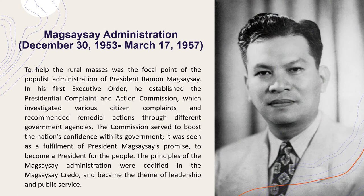Magsaysay Administration, December 30, 1953 to March 17, 1957. To help the rural masses was the focal point of the populist administration of President Ramon Magsaysay. In his first executive order, he established the Presidential Complaint and Action Commission, which investigated various citizen complaints and recommended remedial actions through different government agencies. The commission served to boost the nation's confidence in its government. It was seen as a fulfillment of President Magsaysay's promise to become a president for the people. The principles of the Magsaysay administration were codified in the Magsaysay Credo and became the theme of leadership and public service. He was immensely popular with the ordinary people and is popularly known as the Man of the Masses.